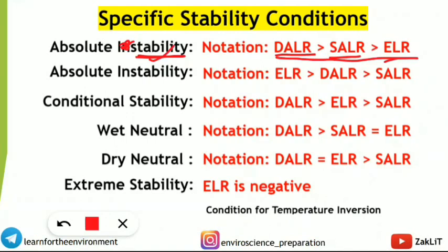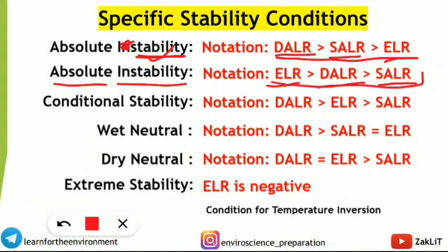Coming to the next condition — absolute instability. In absolute instability, the dry adiabatic lapse rate comes in between the environmental lapse rate and the saturated adiabatic lapse rate. A question can be asked by giving this notation and you will have to answer whether it represents absolute instability or absolute stability.